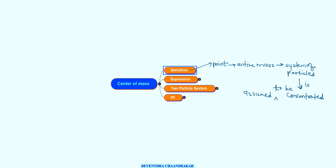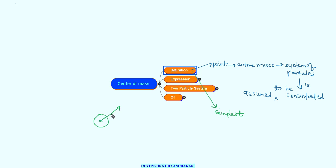The motion at the center of mass is the simplest. If an object is rotating — suppose there is a ball and I spin it — then the center of mass will follow a simple parabolic path, while the rest of the particles will follow a more complicated path.